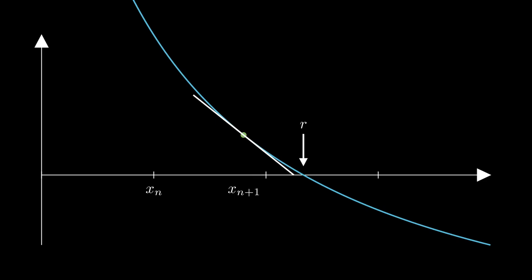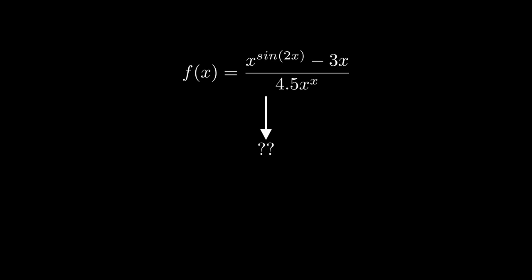The way the method does this is by approximating the root of a function by finding the root of an approximation of the function. Basically, since it's too hard to find the root of f, we replace f with a linear function that also has a root near the same place, which is much easier to solve, and we solve that linear equation instead.